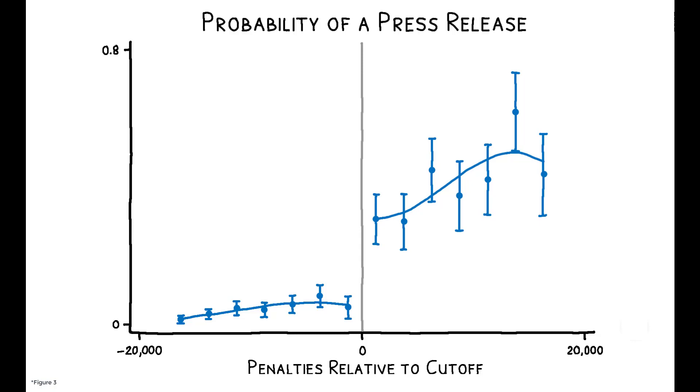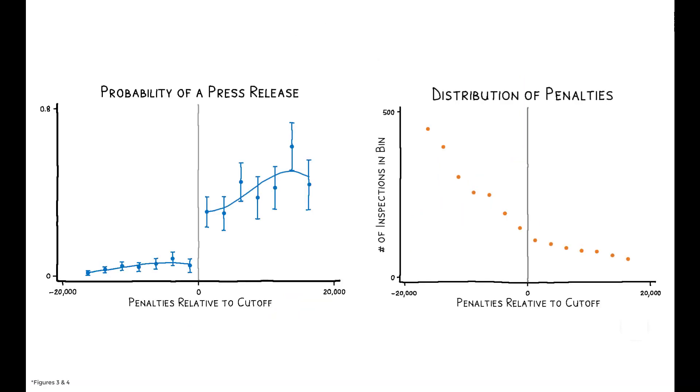Note that this strategy hinges on the assumption that whether penalties end up just above or just below the cutoff is as good as random. These figures support that assertion by showing that, despite the sharp jump in the probability of a press release, the distribution of penalties is actually smooth around the cutoff. This indicates that neither facilities nor inspectors are gaming the system to ensure that cases fall just above or just below the threshold.